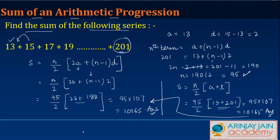So in order to find the sum of an arithmetic progression, there are three things you need to know: the first term, the last term, and how many terms are there in the arithmetic progression.